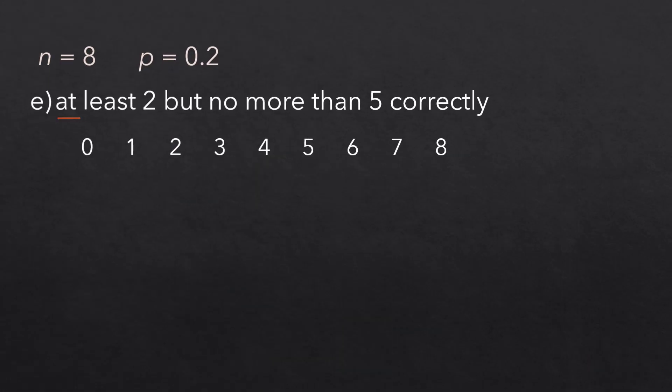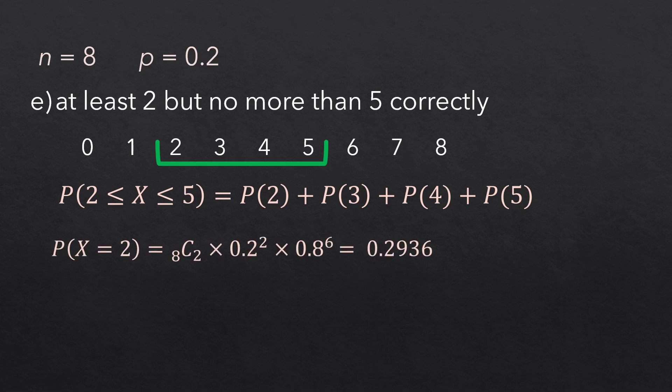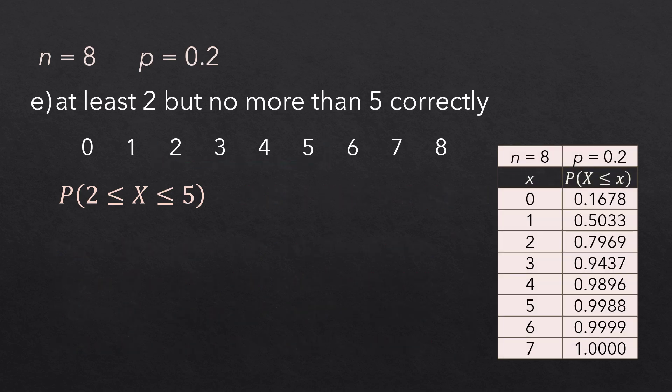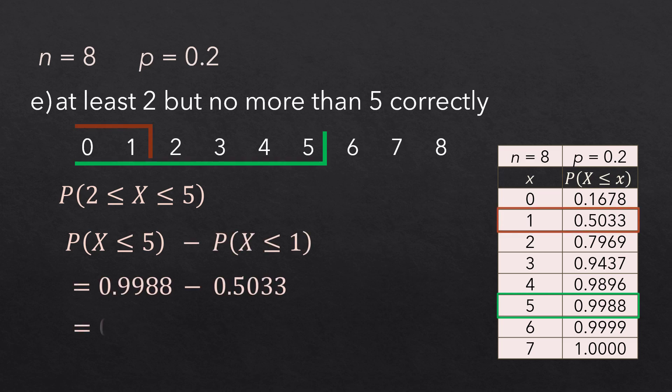Next, at least 2 but no more than 5 means we want 2 to 5 successes. Using the binomial formula, we see that those add up to 0.4955. The cumulative table is a better option in this case since we have 4 calculations using formula. Since we want 2 to 5, we can take the cumulative up to 5 and subtract cumulative up to 1 from it, and that gives us the same result as before.